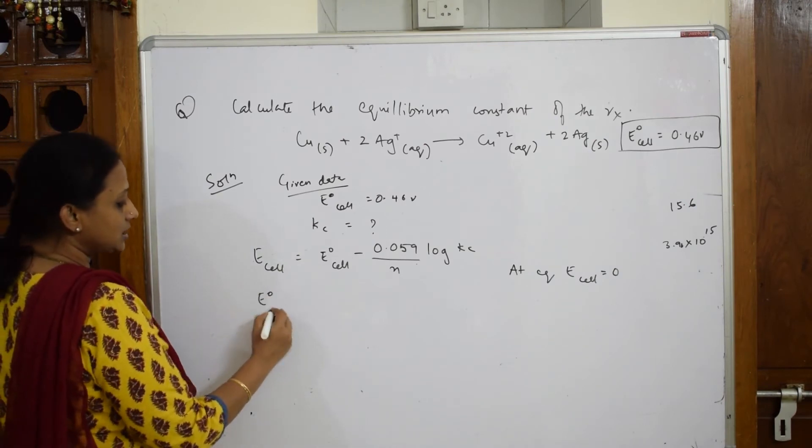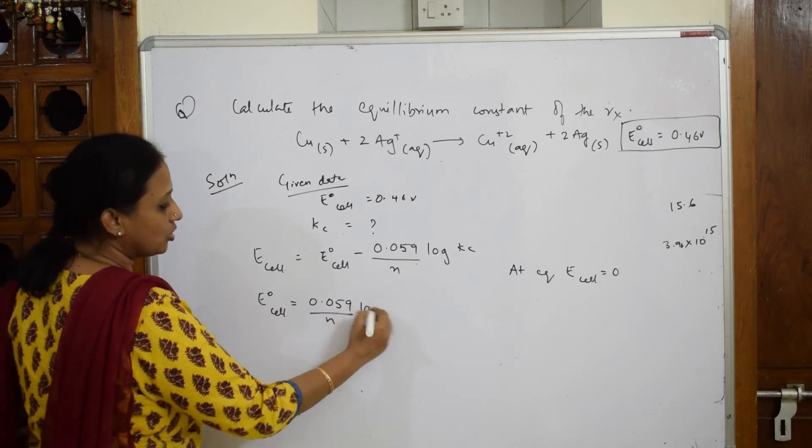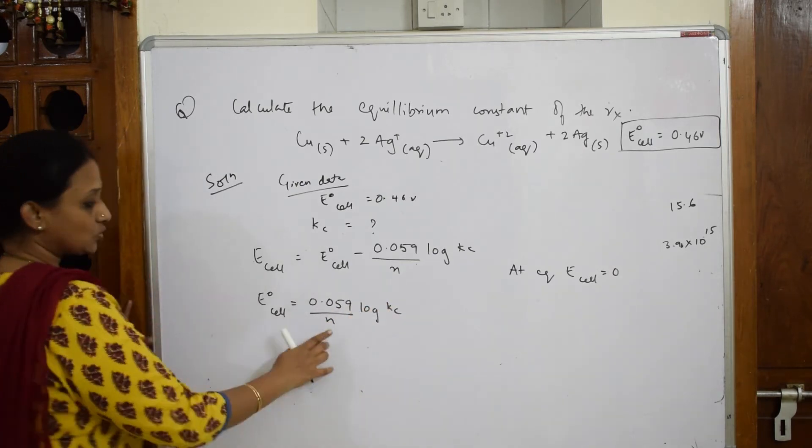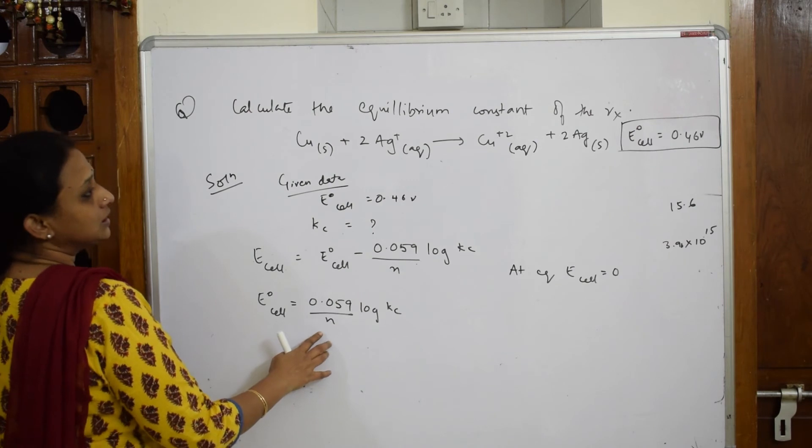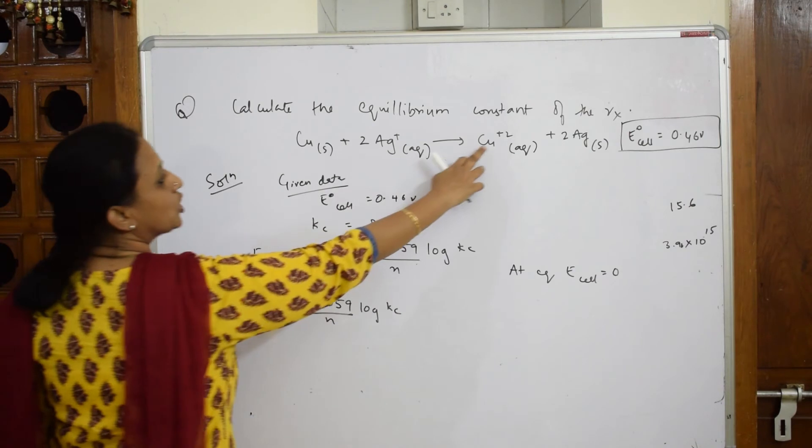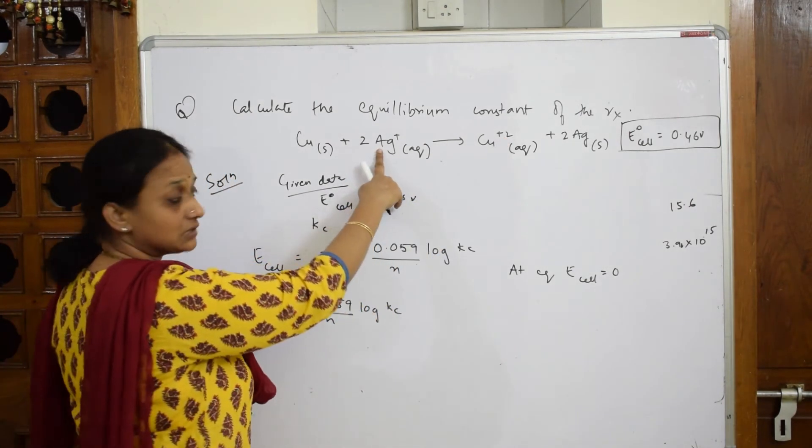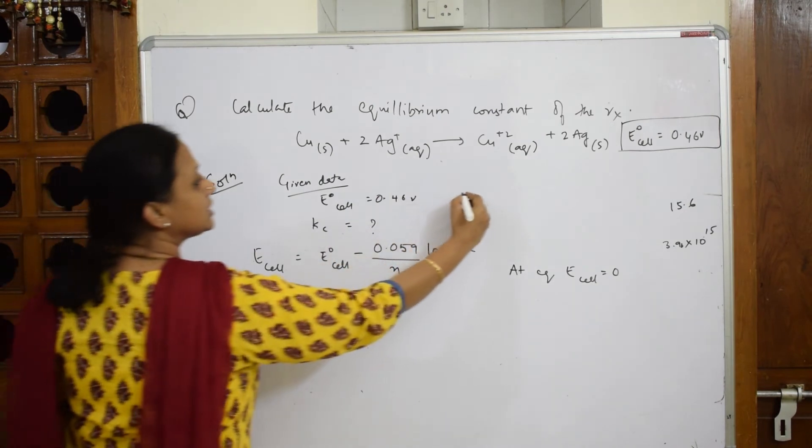E° cell is equal to 0.059 by N log Kc. What is N here? The number of electrons. How many electrons got transferred? When you see from copper to copper plus two, two electrons, isn't it? Those two electrons are picked up by silver. So N is equal to two. You can write that N is equal to two electrons.